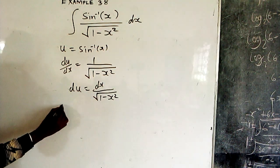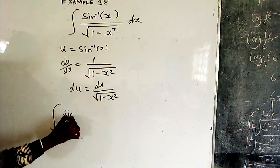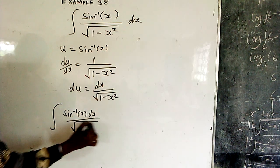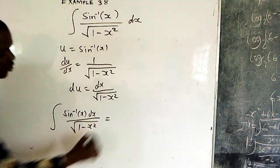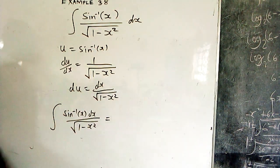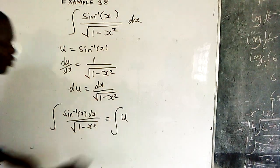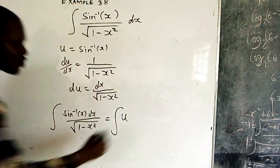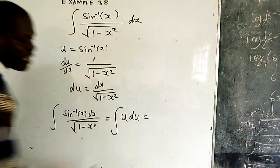So you go to your problem. You were given to integrate sin⁻¹(x) dx over √(1-x²). You can see sin⁻¹(x) is u, you substitute. So you are integrating u. Then dx over √(1-x²) is du. So it's like you are integrating u du, isn't it?